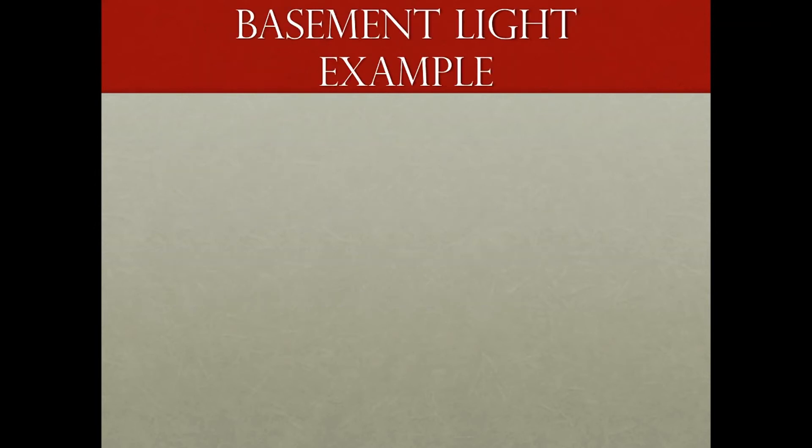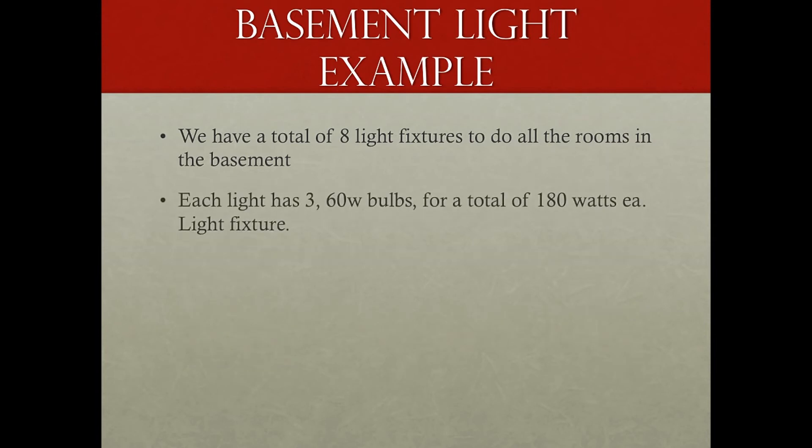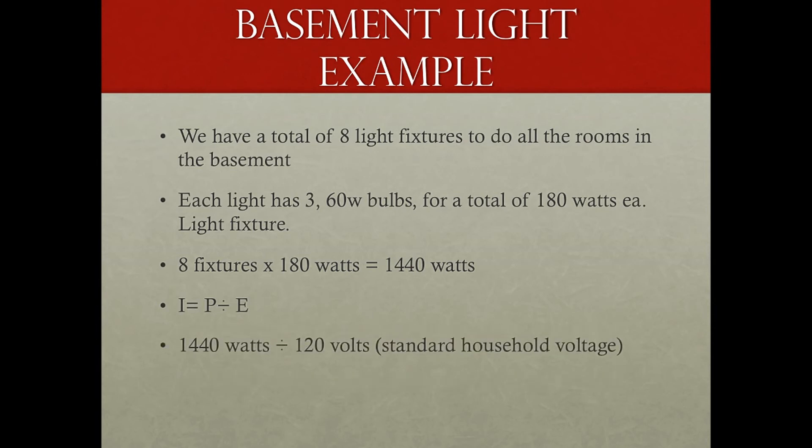So let's do a little example here. Say we're going to remodel a basement. And we want to light the whole basement and see if we can do that on one circuit. So we have a total of eight light fixtures to do all the rooms in the basement. And each light has three bulbs, three 60-watt bulbs, for a total of 180 watts each light fixture. Now we take the eight light fixtures times 180 watts equals 1,440 watts. And we take our equation here, and our P is 1,440 watts divided by E, the 120 volts, which is their standard household voltage. And that gives us 12 amps. Well, we look at our previous example. We know that the 12 amps, if we took 15 amps times 80%, it's 12 amps. Yes, we could do that whole lighting of our basement off of one 15-amp breaker. So that's a pretty good example.